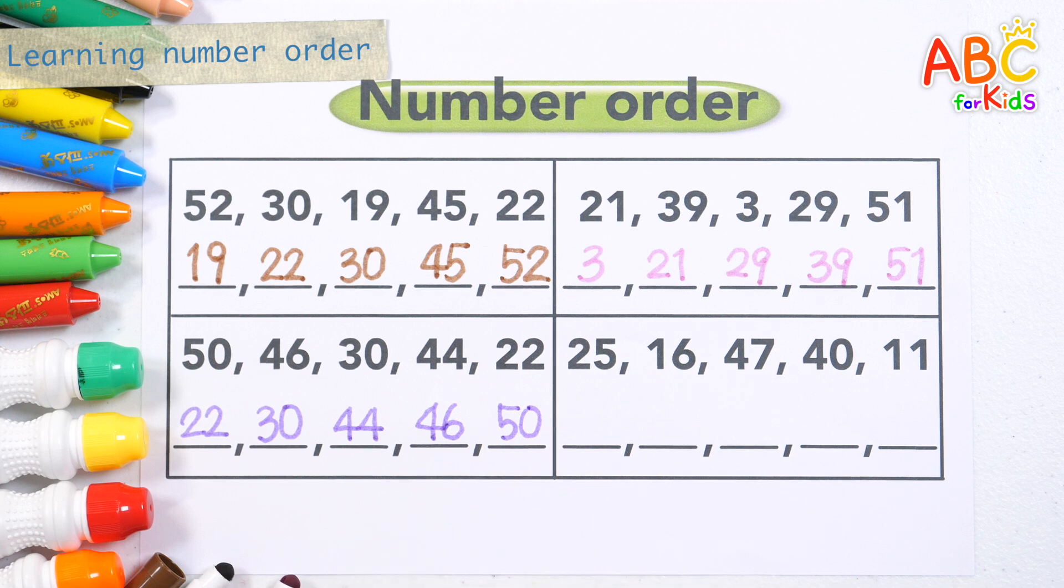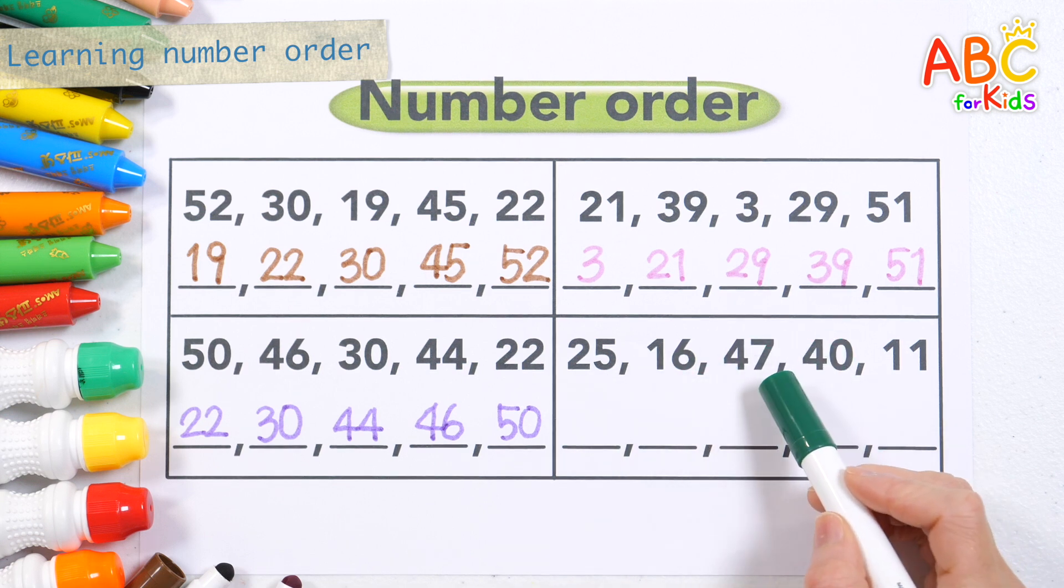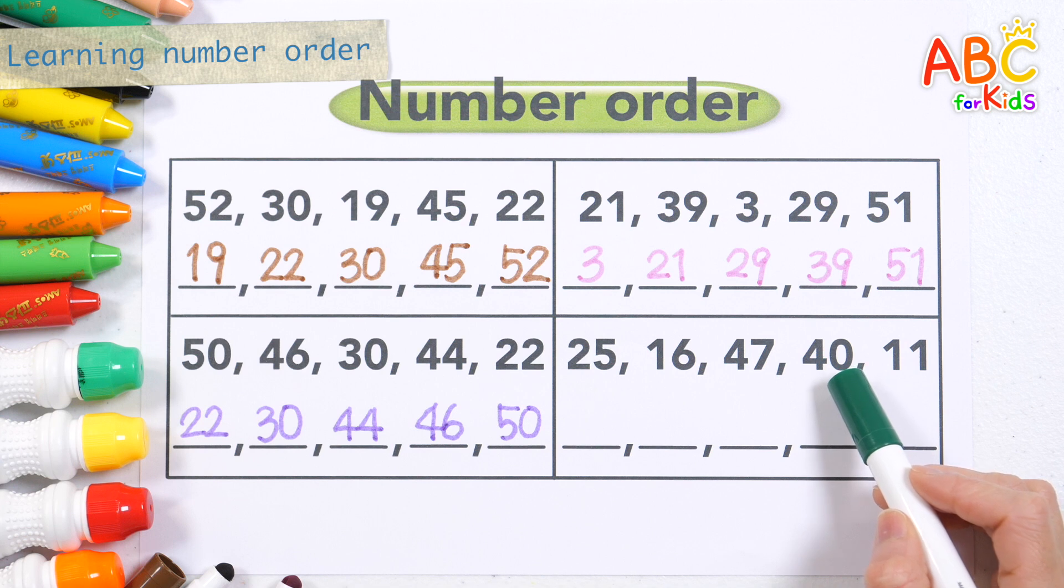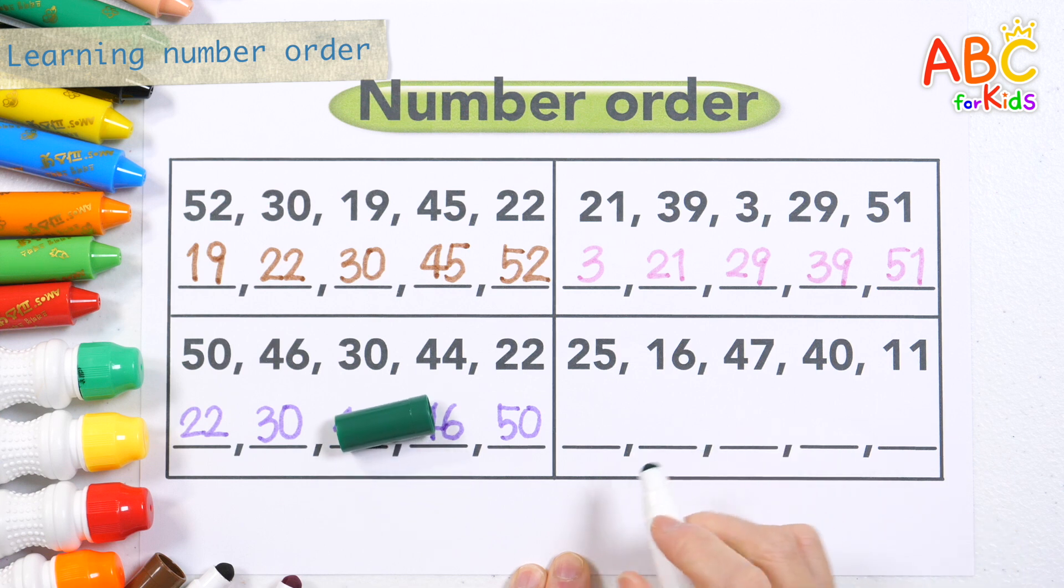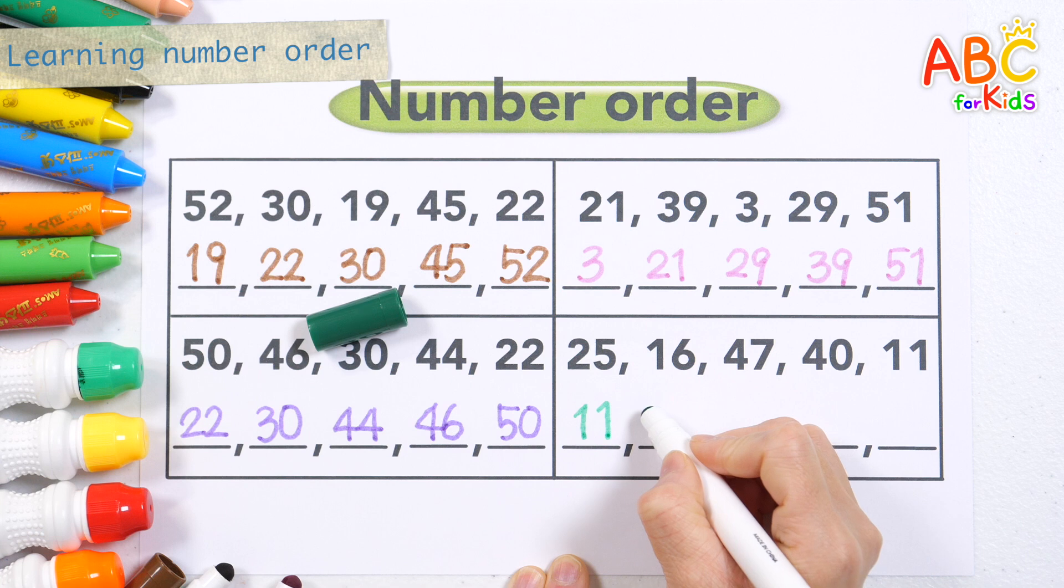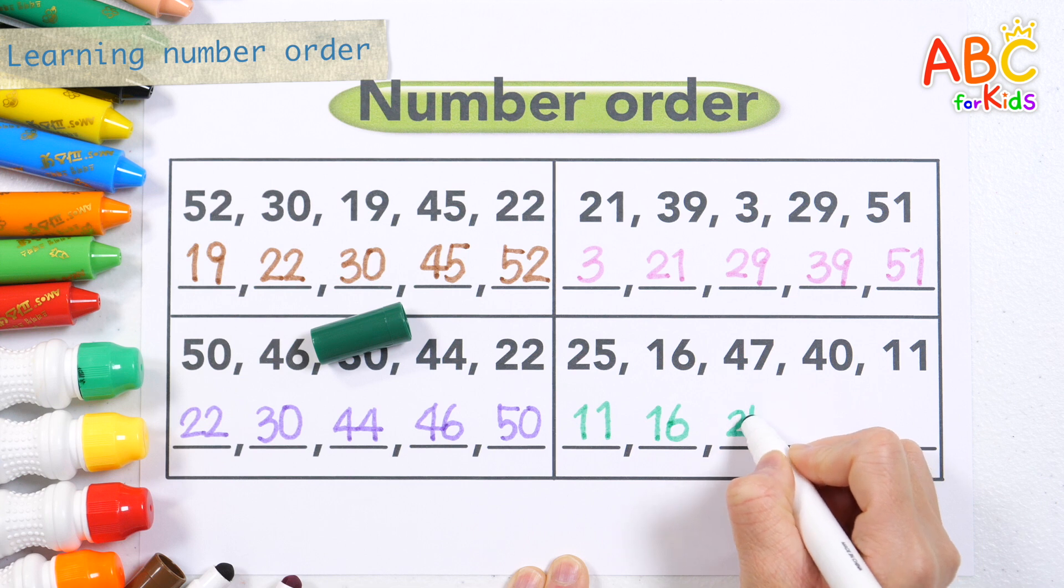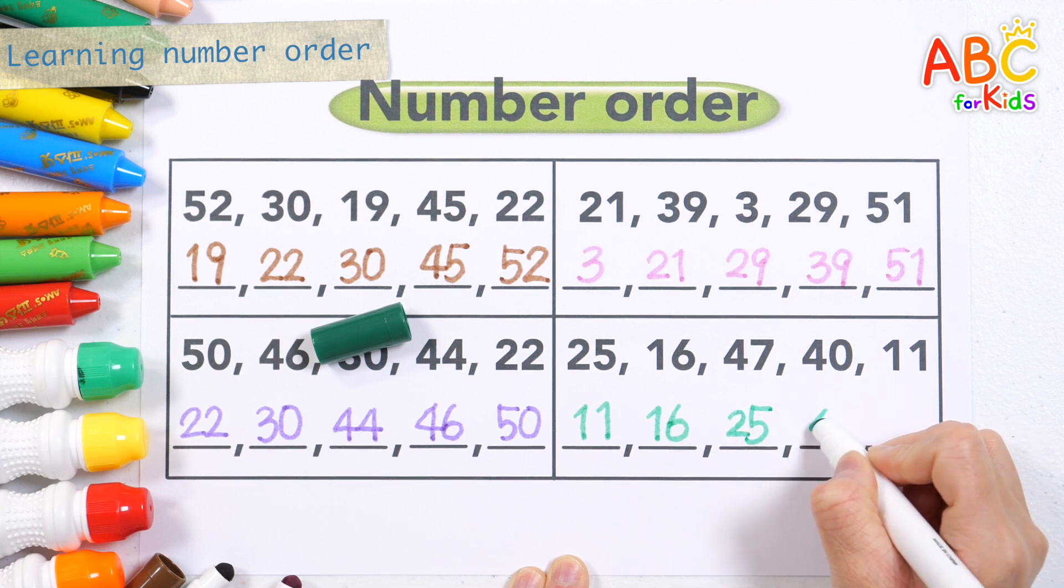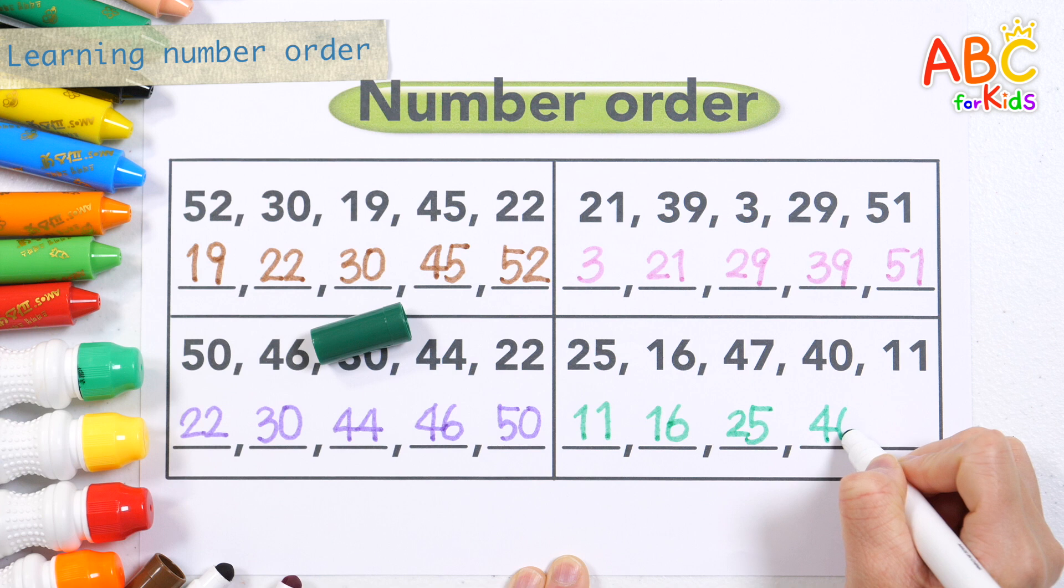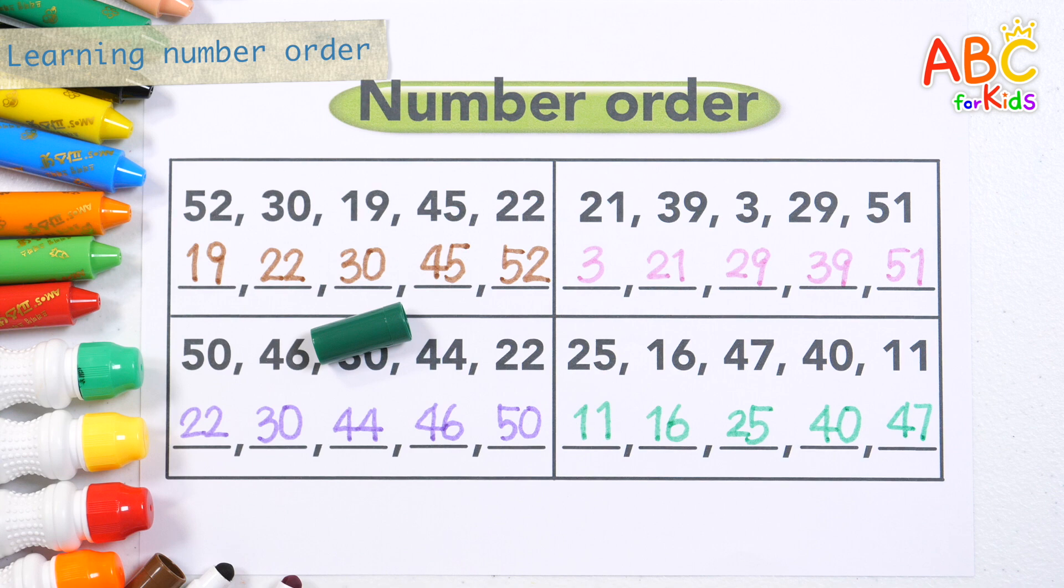Let's write the numbers in order with a green pen. 25, 16, 47, 40, 11. Let's write the numbers in order from smallest to largest. 11, 16, 25, 40, 47. Great job!